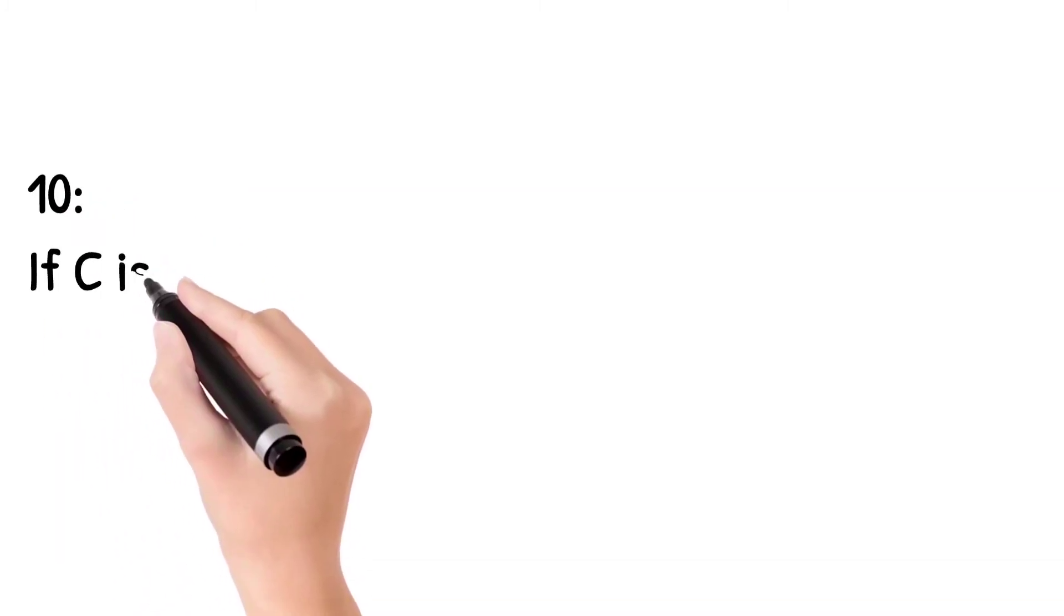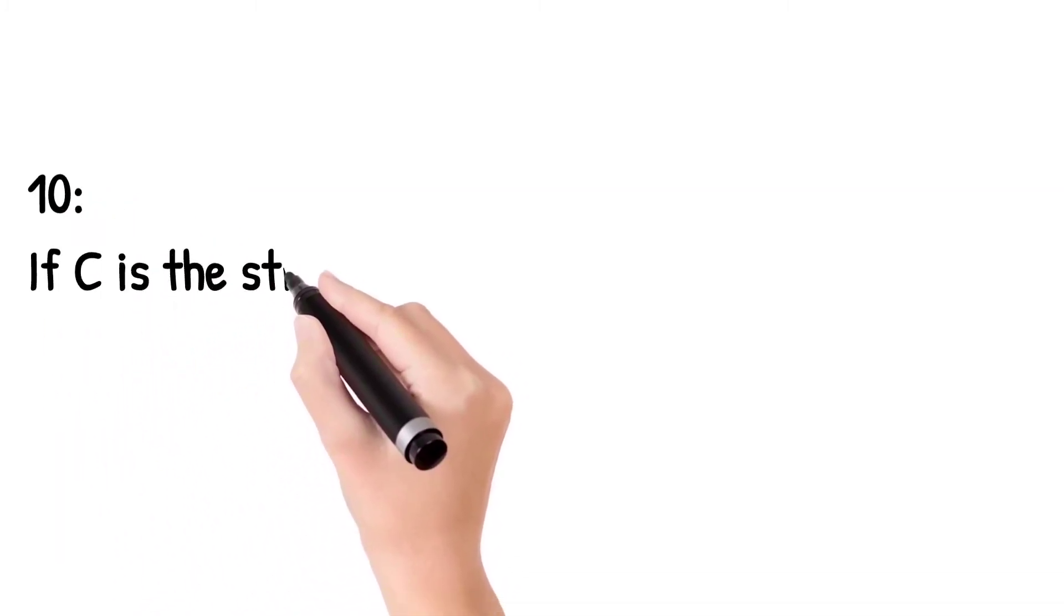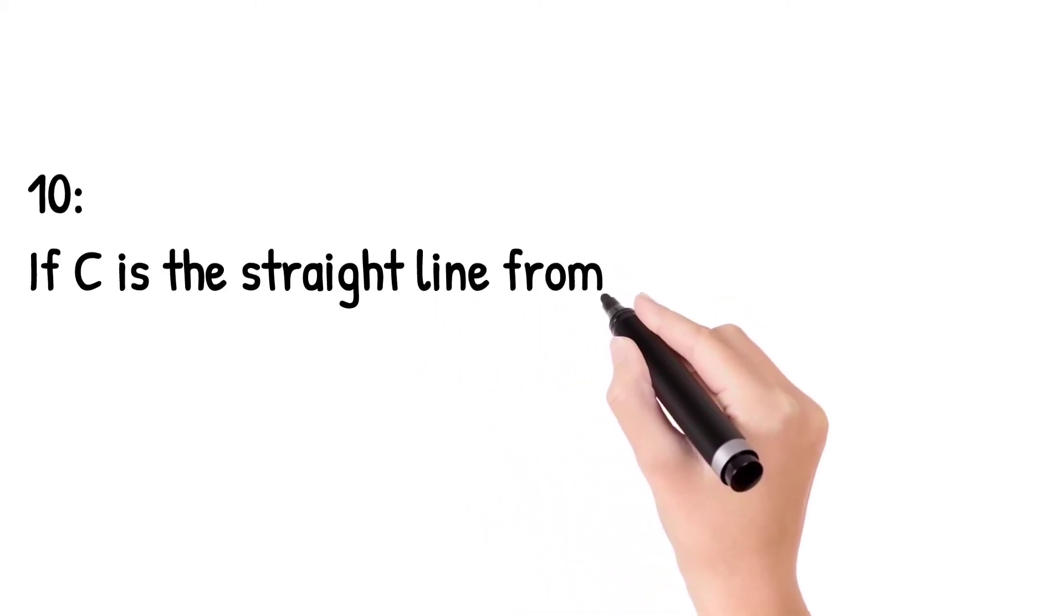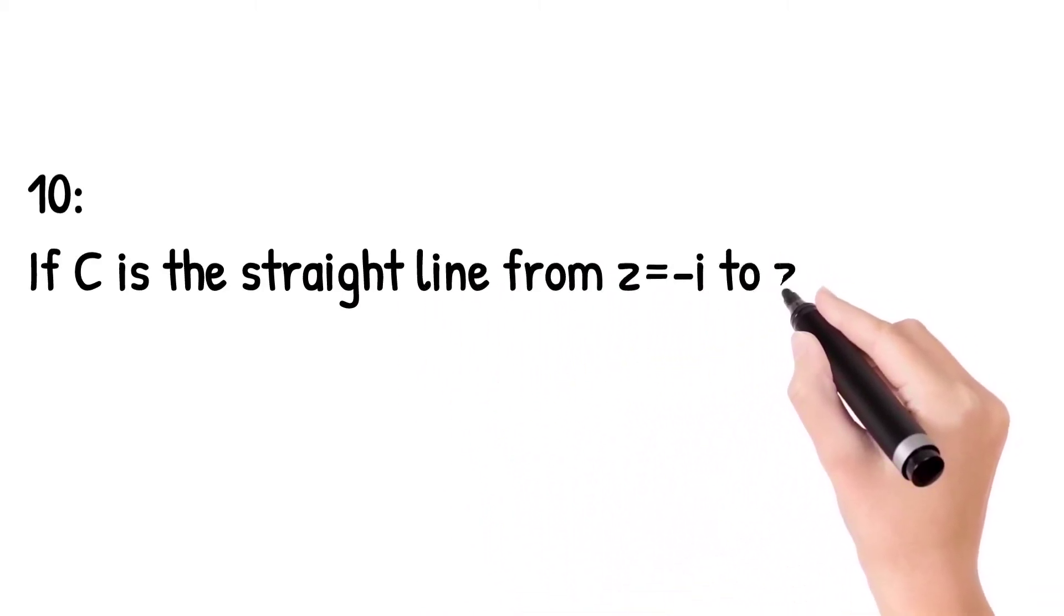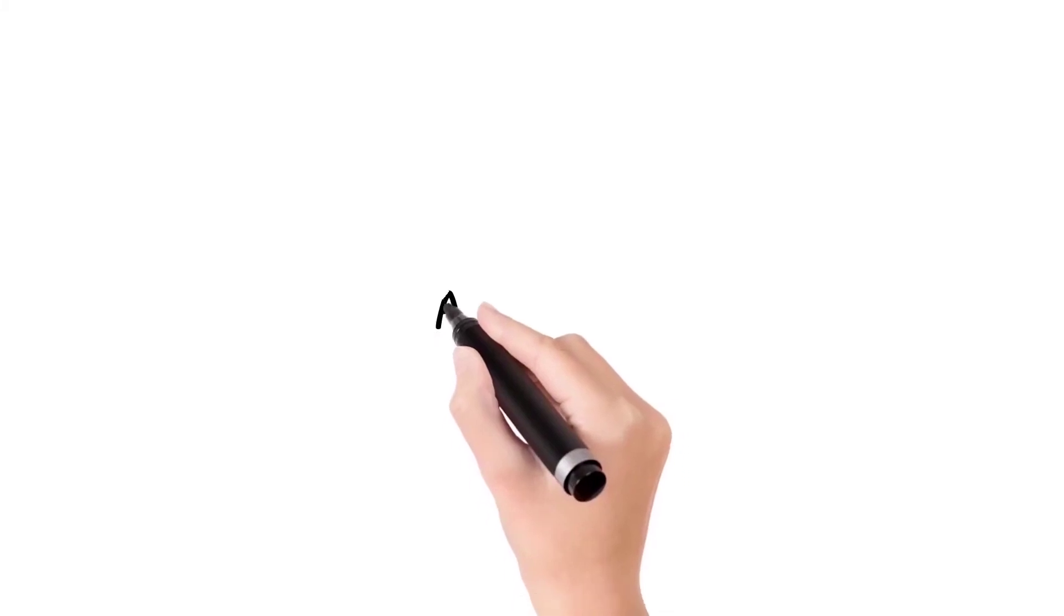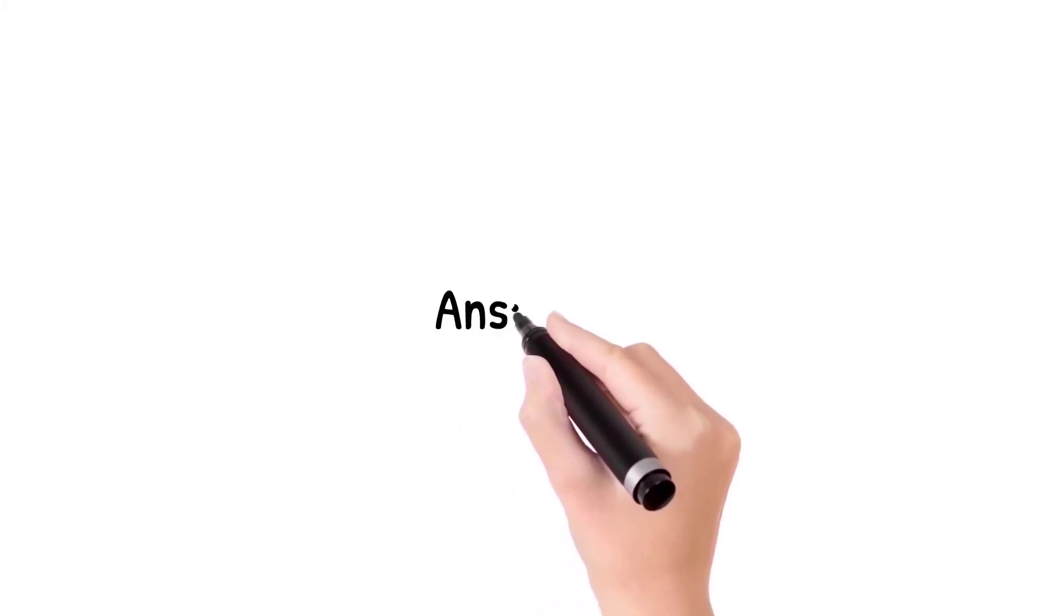Question number 10: If c is the straight line from z equal to minus iota to z equal to plus iota, then c of z is? Answer is 0.